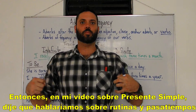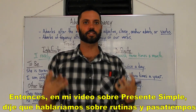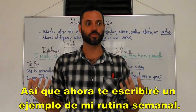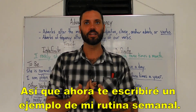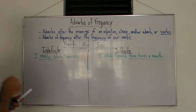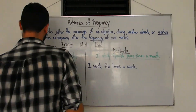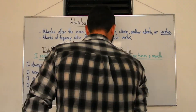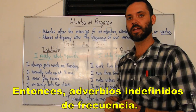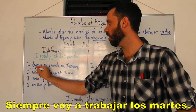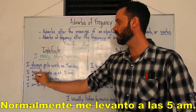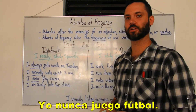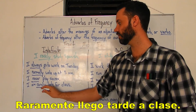In my video about present simple, I said we would talk about routines and hobbies, and how we can use our adverbs of frequency and present simple to talk about our routines and hobbies. So I will now write you an example of my weekly routine using indefinite adverbs of frequency: I always go to work on Tuesday; I normally wake up at 5am; I never play soccer; I am rarely late for class.